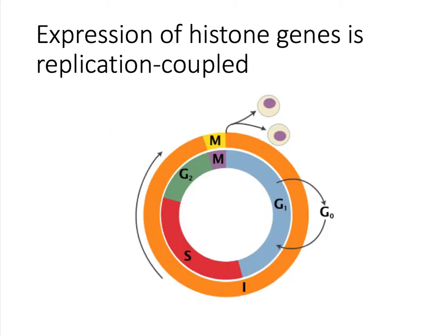As cells go through the cell cycle, the point where histone proteins are most needed is during S phase, when the DNA is being replicated. New DNA strands are being generated, and now we have twice the amount of DNA that needs to be packaged in the nucleosomes. To make sure that the histones are available, the expression of the histone genes is coupled to replication, and only during S phase are new canonical histones being generated.